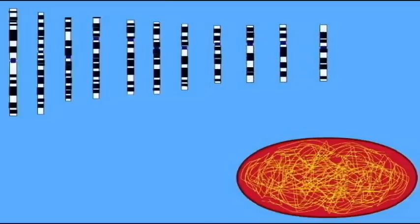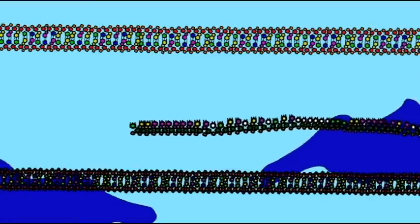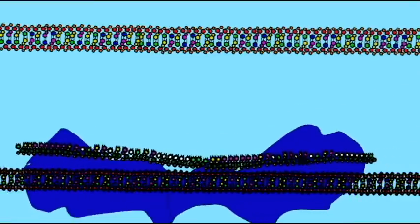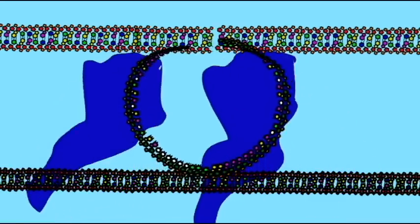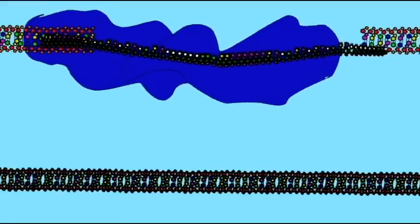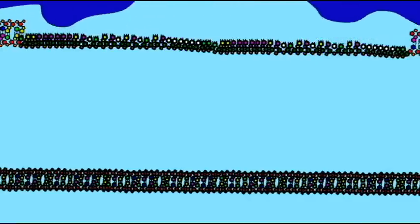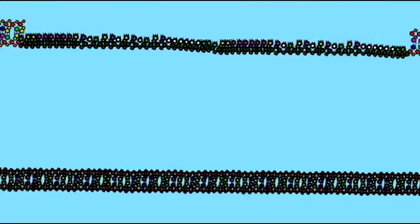Two proteins, which are components of the signal recognition particle, transport the RNA of an ALU sequence to a ribosome. If the cell is producing proteins from a transposon, an L1 transposon, the ALU RNA can attach to one of these proteins and replace the transposon mRNA. As a result, ALU amplification utilizes the cellular machinery of L1 transposons.